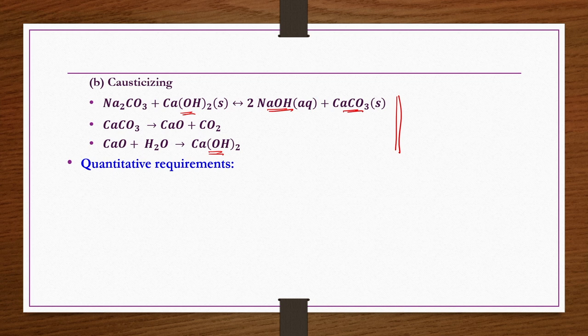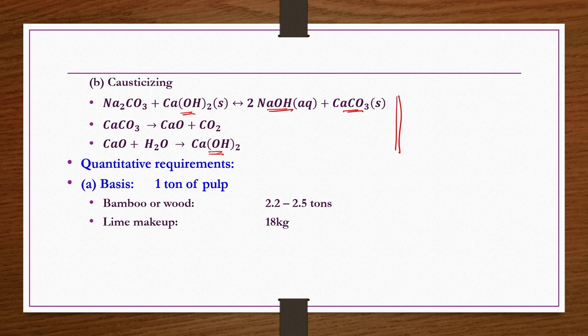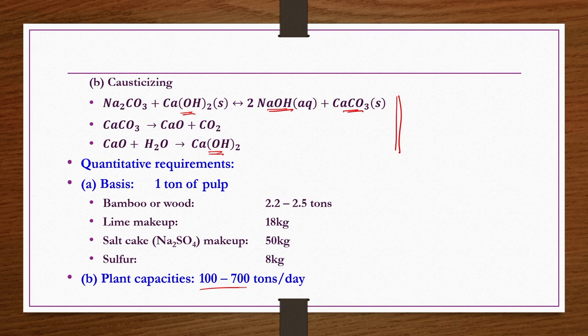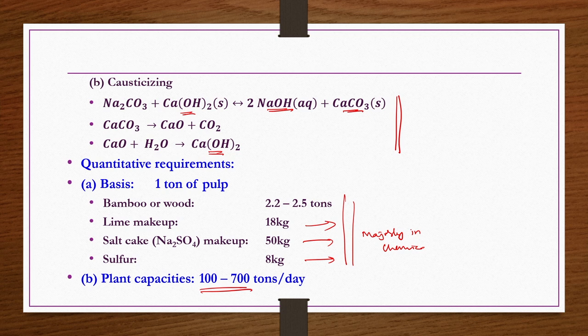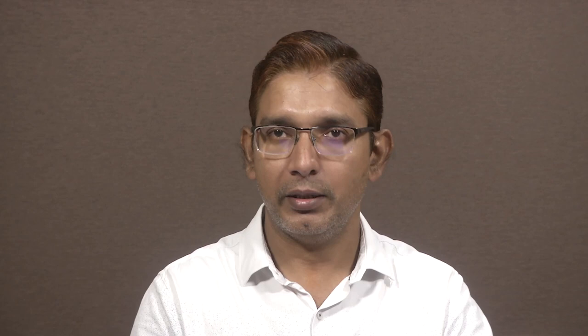Quantitative requirements on basis of 1 ton of pulp (bone dry solids basis): bamboo or wood 2.2 to 2.5 tons, lime makeup 18 kg, salt cake (Na2SO4) makeup 50 kg, sulfur 8 kg, plant capacity 100 to 700 tons per day. Most of these chemicals — lime, salt, sulfur — are primarily used in the chemical recovery part rather than the main digester.